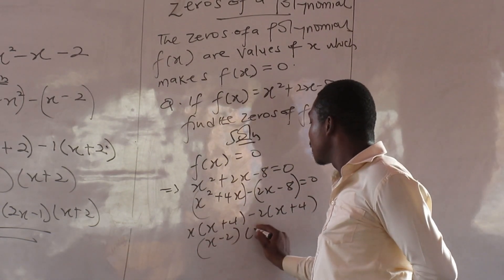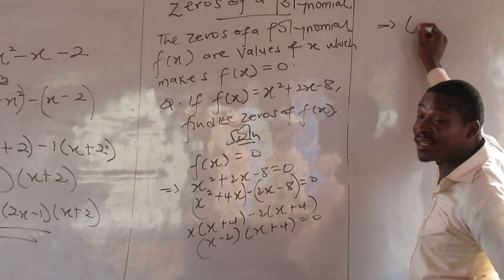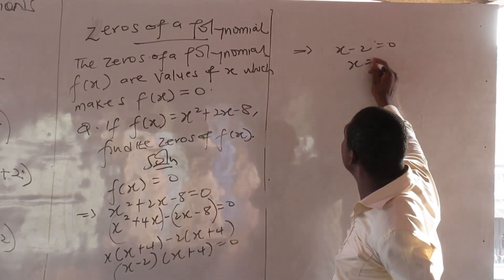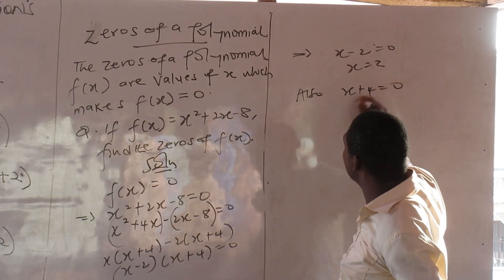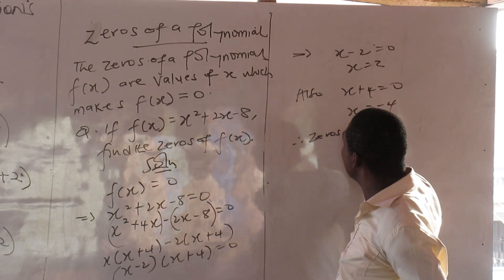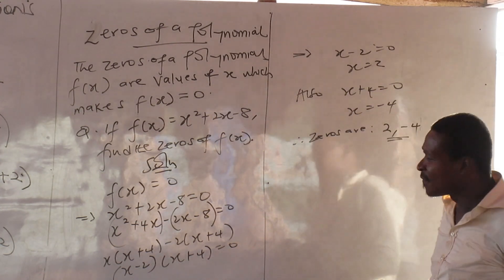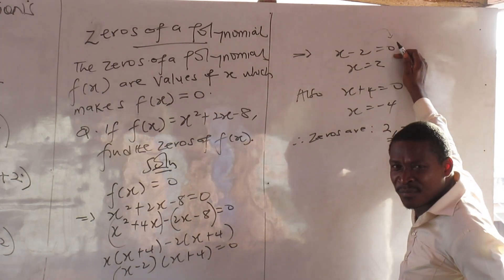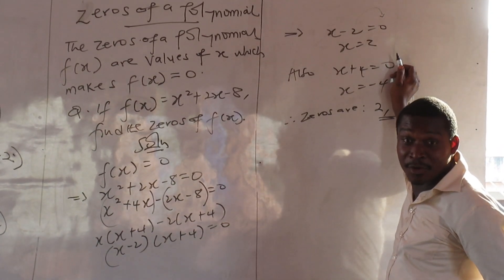So you have (x minus 2)(x plus 4), all equals zero. Now, implication: x minus 2 equals zero, so x equals 2. Also, x plus 4 equals zero, so x equals minus 4. Therefore the zeros are 2 and minus 4. Watch here — why do you call them zeros? They are taking the position of zero.